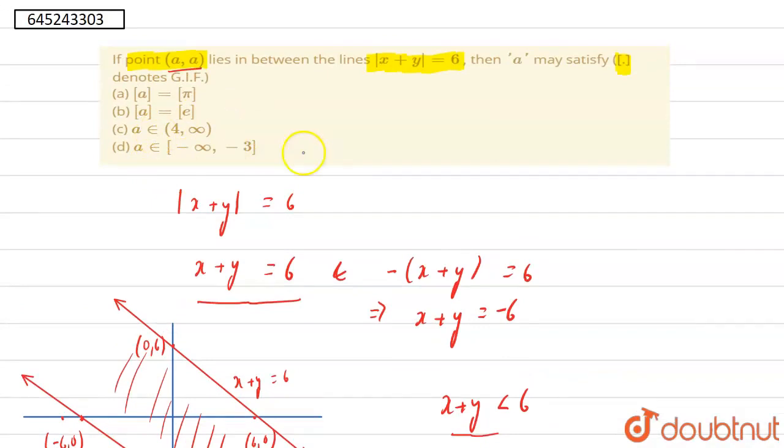So now we see option then our option A is wrong and minus 3 is not included. This is also wrong. Now we see that this is the GIF of E which is 2.7, so it is equal to 2. And this is equal to 3.14, so this is equal to 3 and 3 is included. So this is also correct. So there are two correct options.